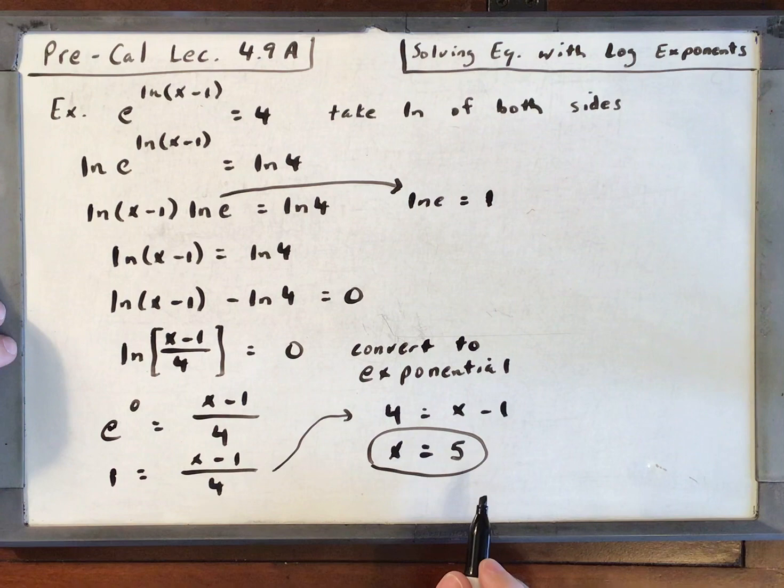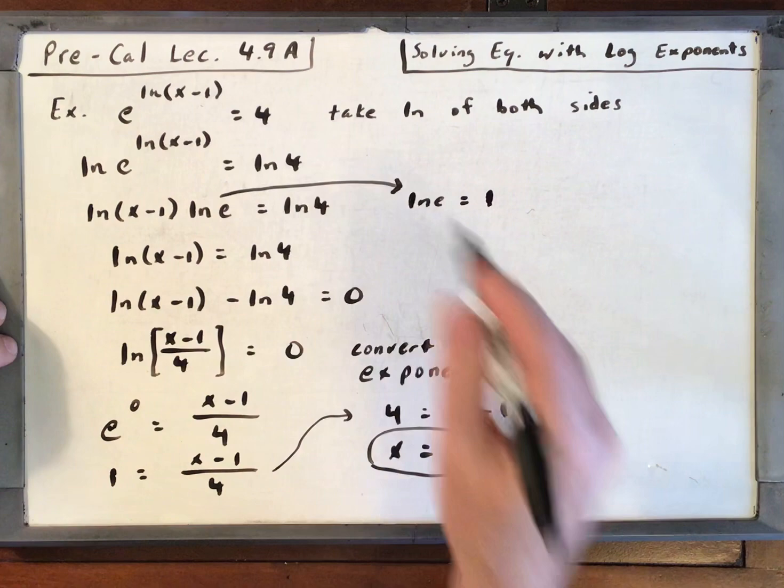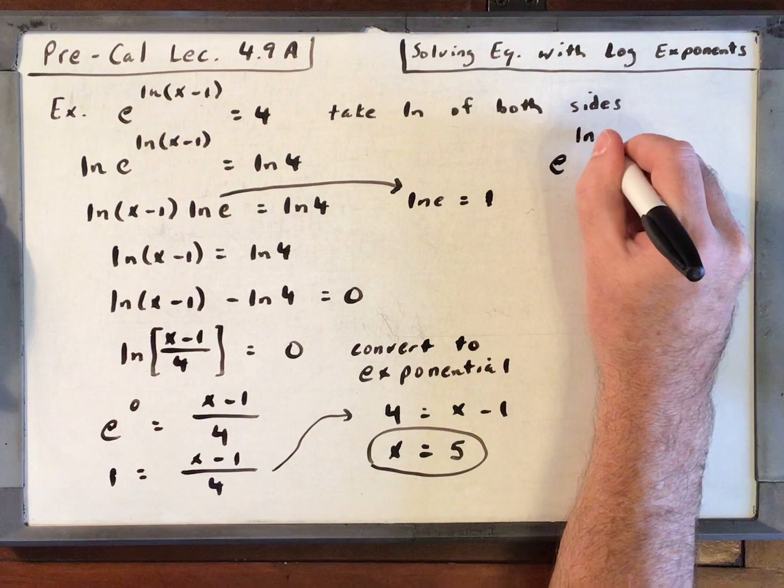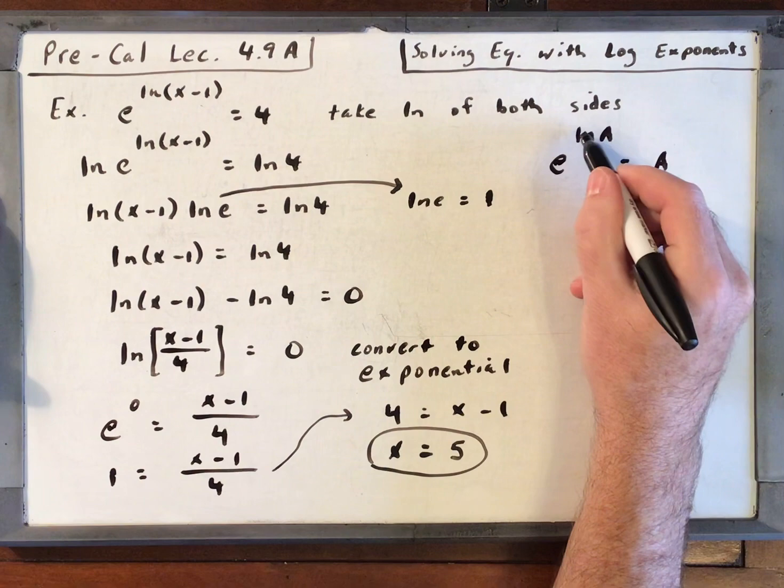We could plug that in, plug 5 in, and see that it's not extraneous and it checks. However, I'm going to leave all this work on here. I want to show you a shortcut. If you can just remember this: e to the natural log of a is equal to a. What happens is the e and the natural log cancel each other out.